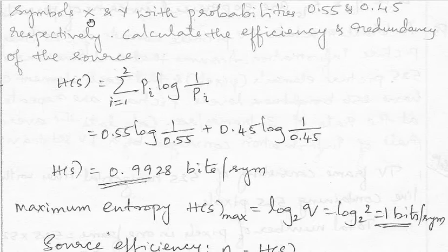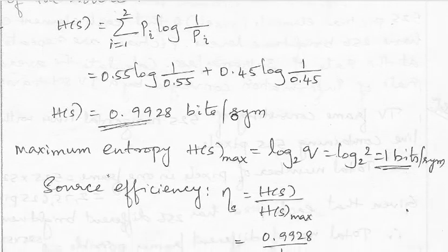So here, the probability of X is 0.55 log to the base 2, 1 by 0.55, plus the probability of Y is 0.45 log to the base 2, 1 by 0.45. So when we find the value, we get H(S) as 0.9928 bits per symbol.